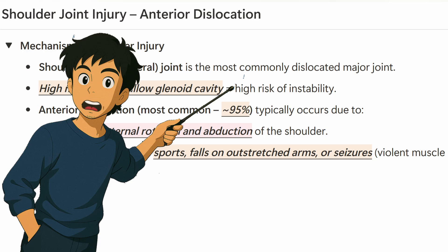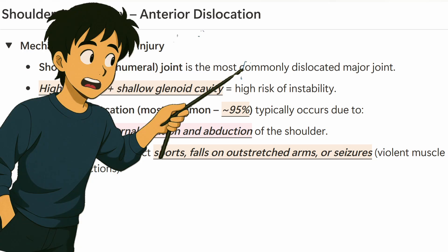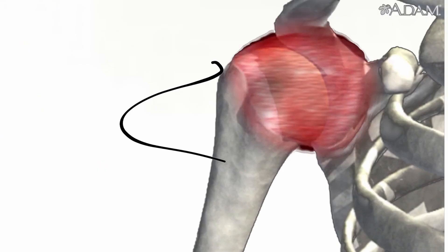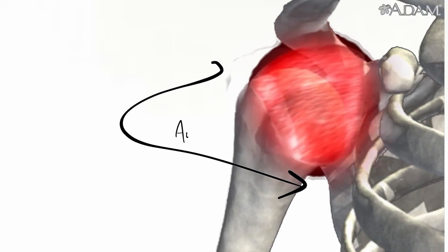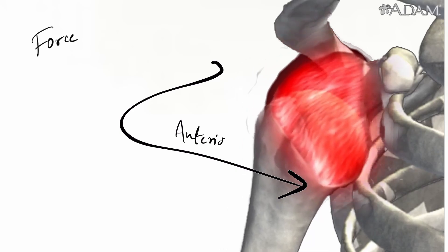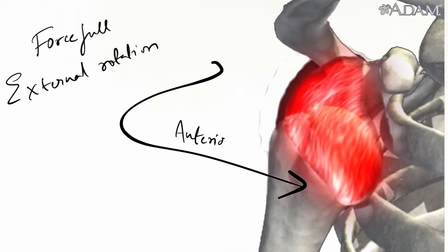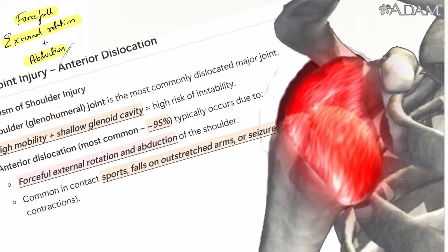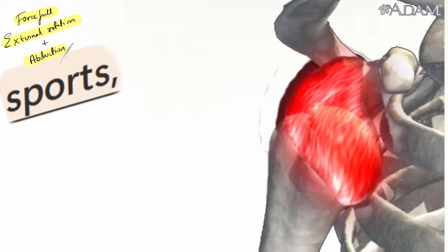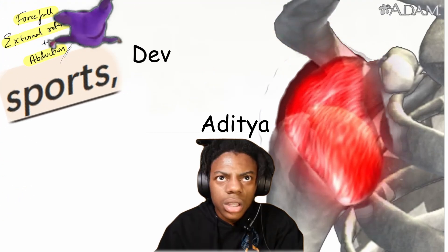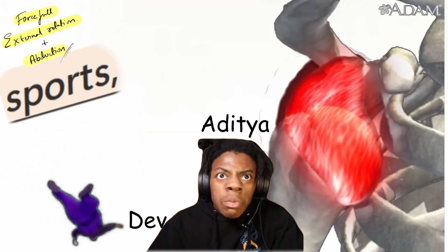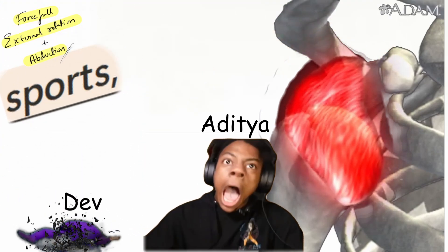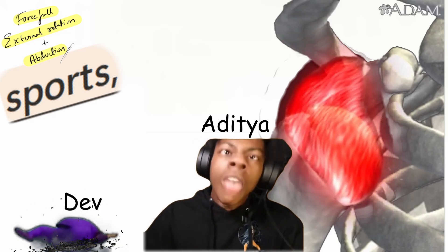The most common dislocation in the shoulder is anterior dislocation. This normally happens because of forceful external rotation and abduction of the shoulder, which are common in sports, falls on an outstretched hand, or sometimes in seizures due to vigorous muscle contractions.